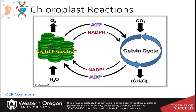This is very similar to the electron transport chain, but here the energy being utilized to create the ATP is not coming from food molecules — instead it's coming from the energy of the sun. The ATP and the NADPH, the electrons, are used to reduce carbon dioxide and remake the carbohydrates or glucose molecules.